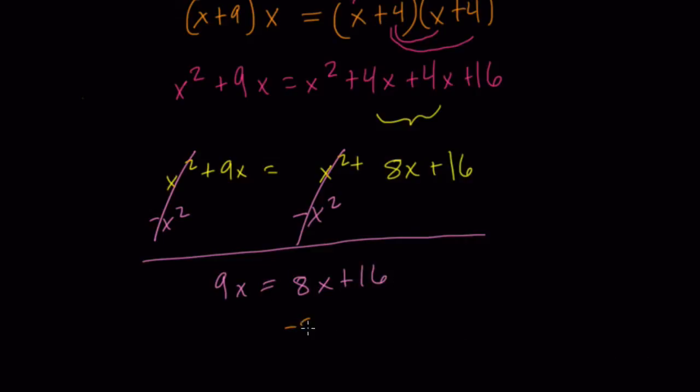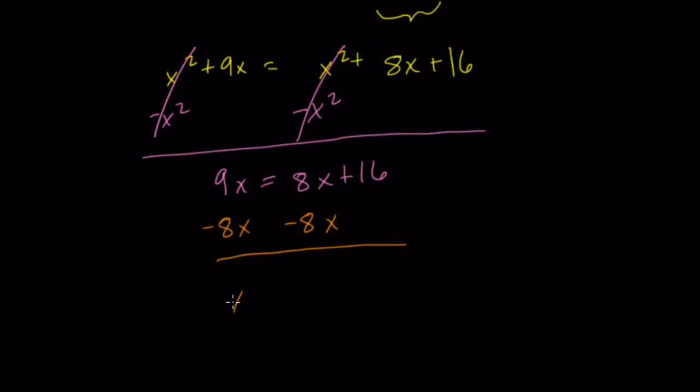Next, I would subtract 8X from both sides. And we're left with a nice, easy, basically two-step equation now. We have X equals 16. So once we subtracted X squared from both sides, we reach this step right here, and only two steps to go. We subtract 8X from both sides, and X equals 16. And that's our answer.